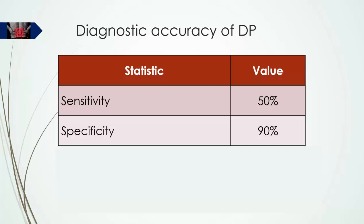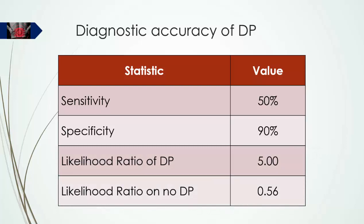The sensitivity of directional preference relative to the reference standard of discography is 50%, meaning it only identifies about half of cases with discogenic pain — so it is not good as a screening test. However, specificity is high at 90%, meaning that when McKenzie's repeated movement assessment identifies a directional preference, you can be 90% certain the intervertebral disc is the source of pain. The positive likelihood ratio is nearly 5, and when directional preference is absent, the likelihood of discogenic cause is about 50-50.